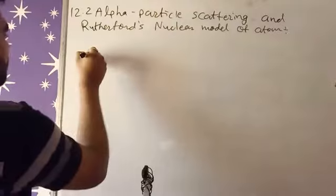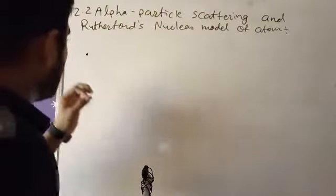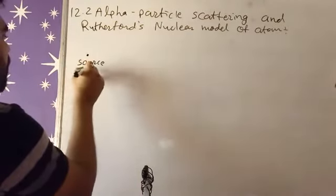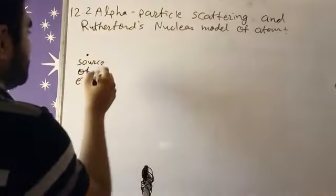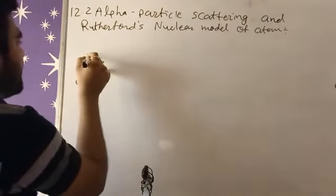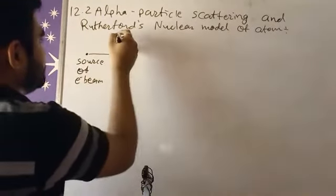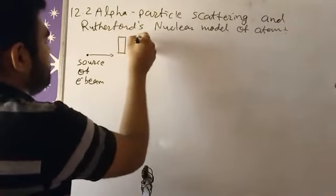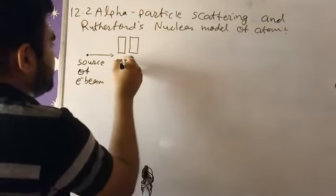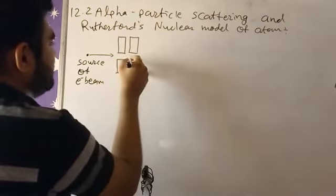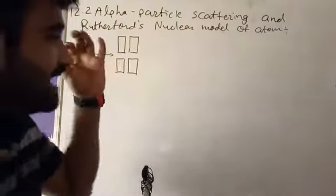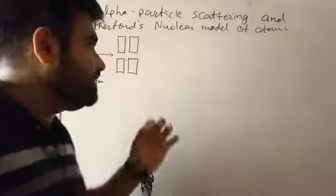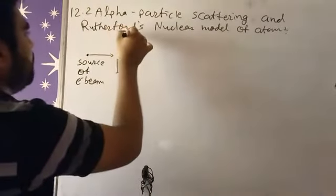So here, this is the source of electron beam. The electron beam is just passing through in this direction. We have lead bricks - why we use this lead bricks? To transform this electron in particular line form. So we get very focused electron beam. That's why we use this lead brick.